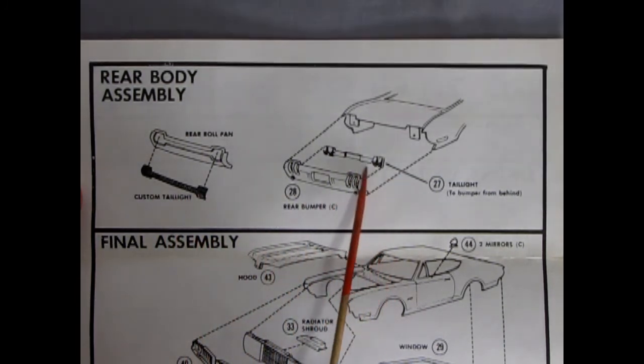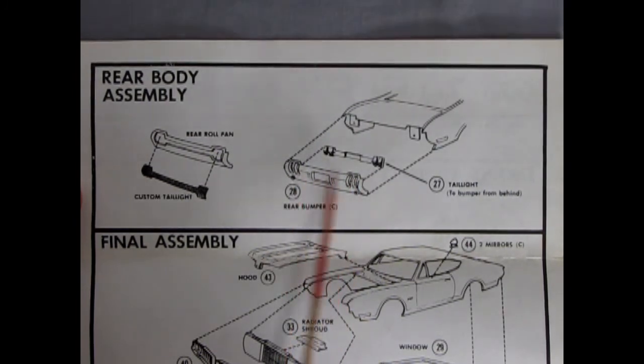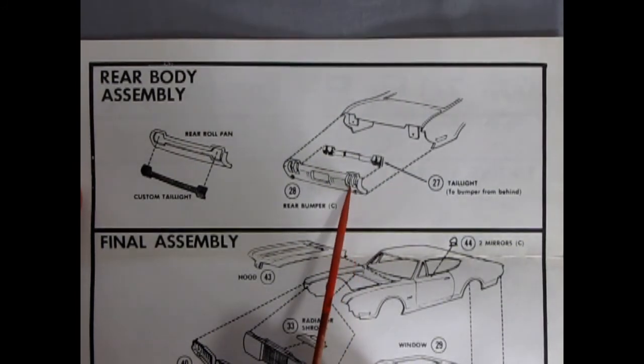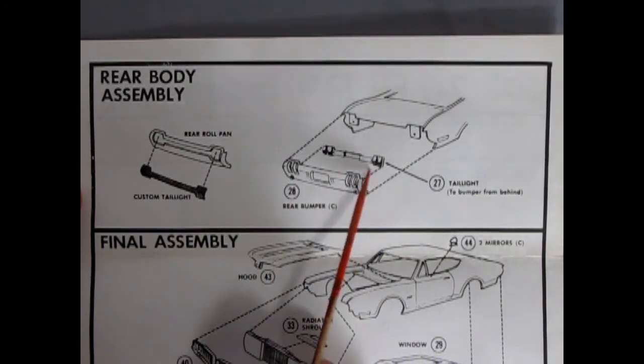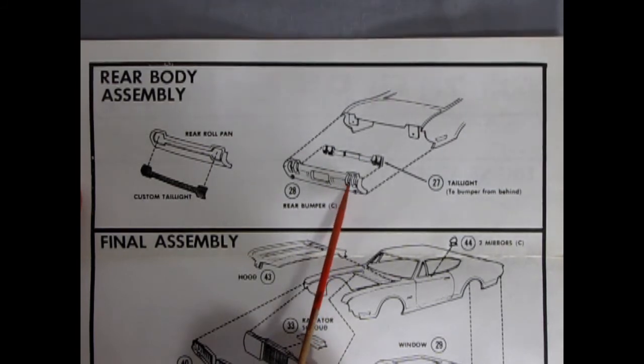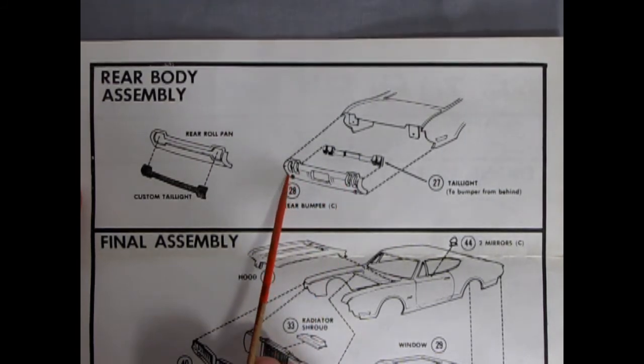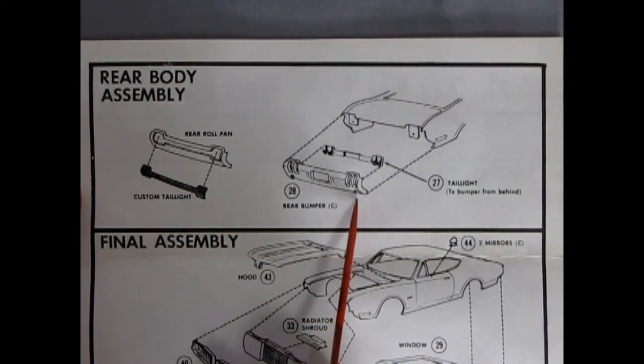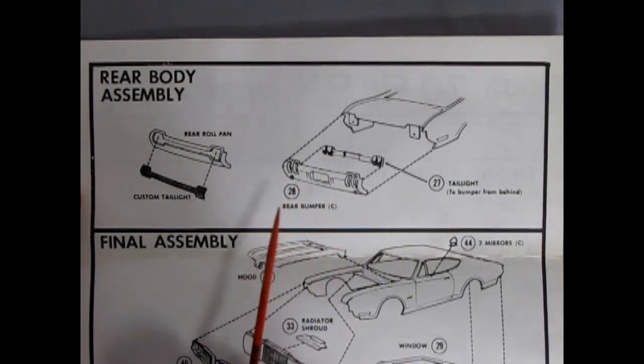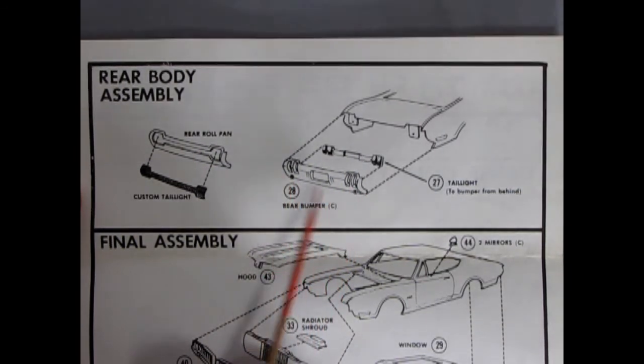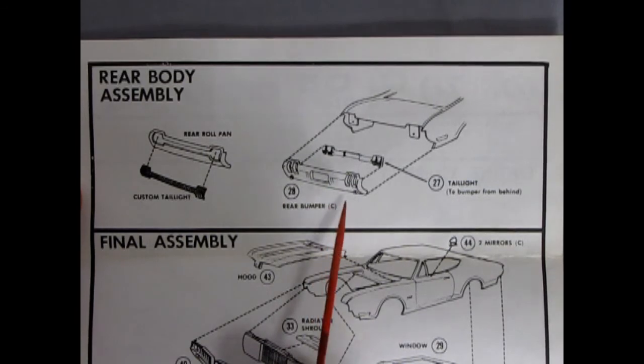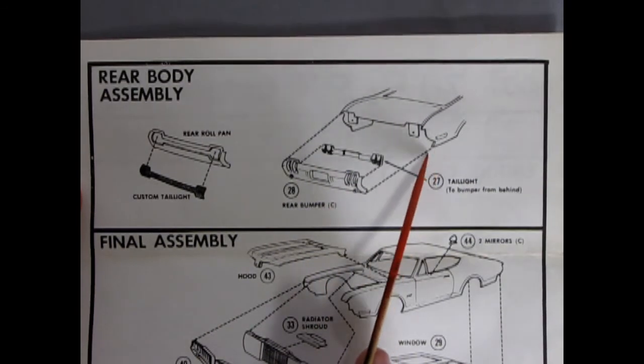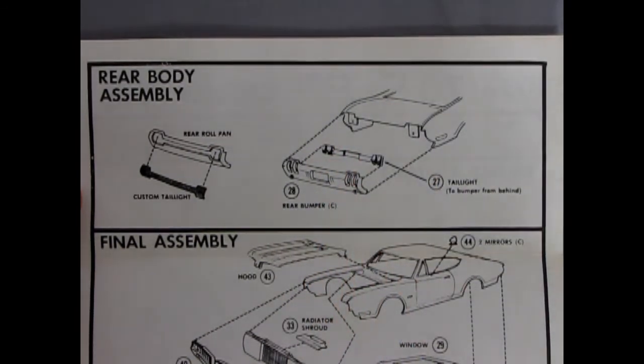Here we have our taillights with the vertical style turn signals. If you want to make a 70 out of this you cut the centers out, replace those, put a bar across there, and then you've got the tail light top and bottom instead. Our rear exhaust trumpets pop through the bumper. This was a special bumper made for 4-4-2s. The stock bumper just went straight across and your exhaust pipes exited lower out the side.